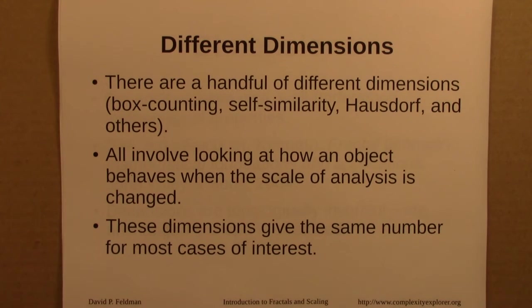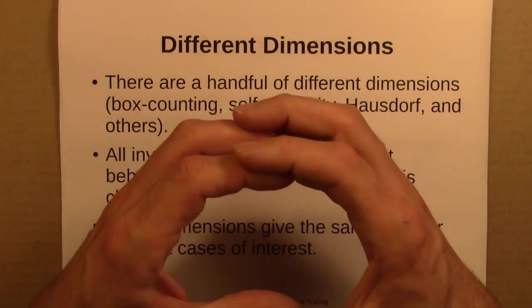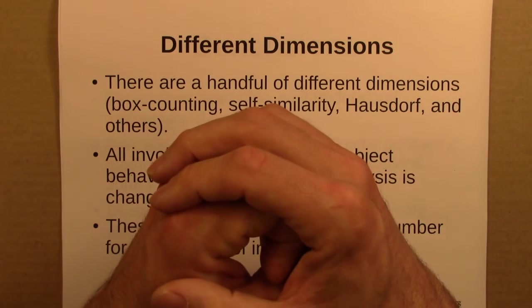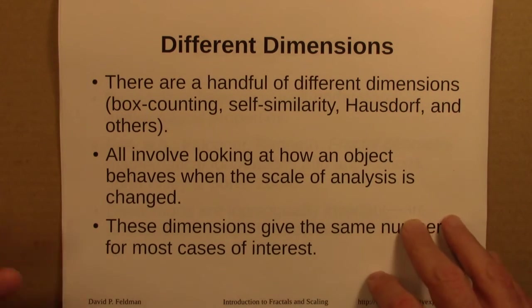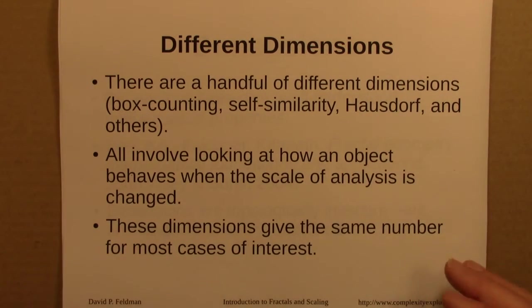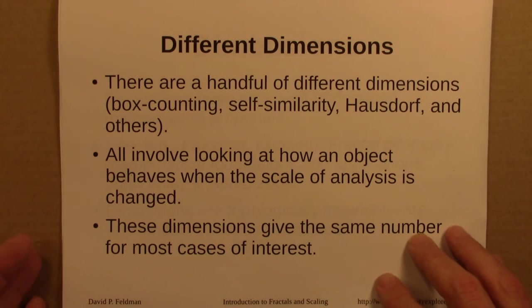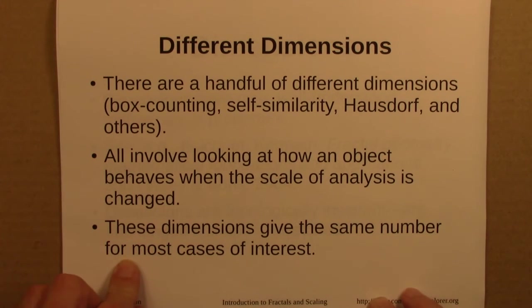So by scale of analysis, I sort of mean the size of the boxes. If we're thinking about big boxes, and then we think about smaller boxes and smaller boxes, how does the N(s), the number of boxes needed, change? And the Hausdorff dimension is a variation on that idea. But the key thing is, is that in sort of application settings, my experience is that in most cases of interest, in most of applied cases, these dimensions are going to give the same number, if they can be calculated.